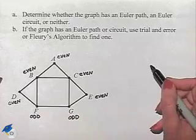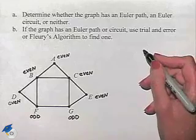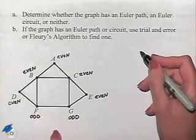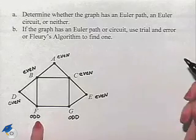Now, according to Euler's theorem, there are two odd vertices, so there exists at least one Euler path, but no Euler circuit. We also know that in order to come up with the Euler path, we want to begin at an odd vertex.